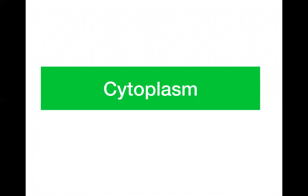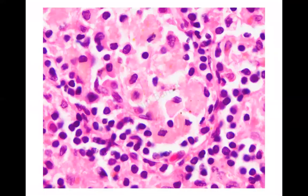Moving to the last cellular feature: the cytoplasm. We describe whether the cytoplasm is scanty, moderate, or abundant, using a lymphocyte as reference. In a lymphocyte, there is a very scanty rim of cytoplasm — if the cytoplasm is less than the nucleus, we say it is scanty. If equivalent to the nucleus, we say it is moderate. If more than the nuclear area, we call it abundant, as seen in a histiocyte. We measure cytoplasm against the area occupied by the nucleus.